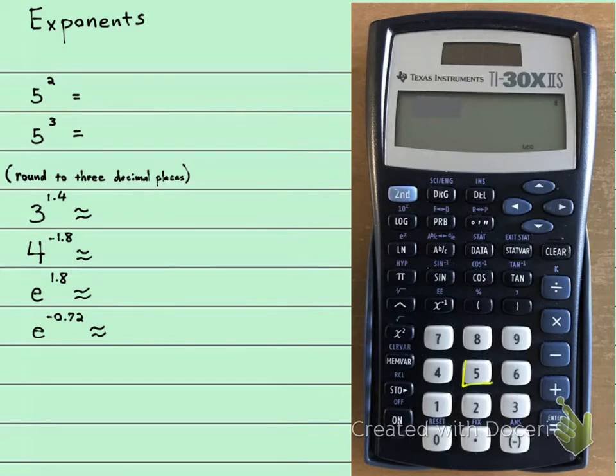So in the calculator we're going to press 5, and then we're going to press this button right here. That will do a square. So 5 squared equals, and then we get 25.